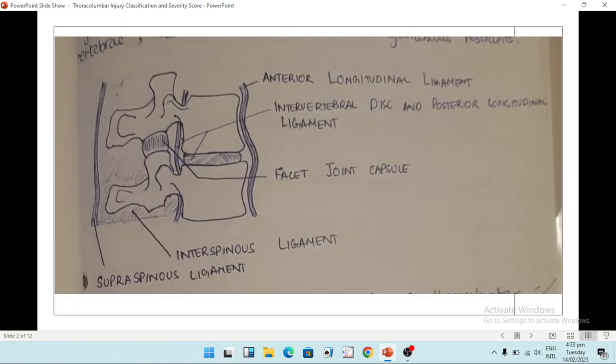But before we discuss the fractures, we have to understand the basics, which include the spinal anatomy. If we take the vertebral column, it is composed of a series of motion segments. A motion segment consists of two adjacent vertebrae, their intervertebral discs, and the ligamentous restraints. This is one whole motion segment.